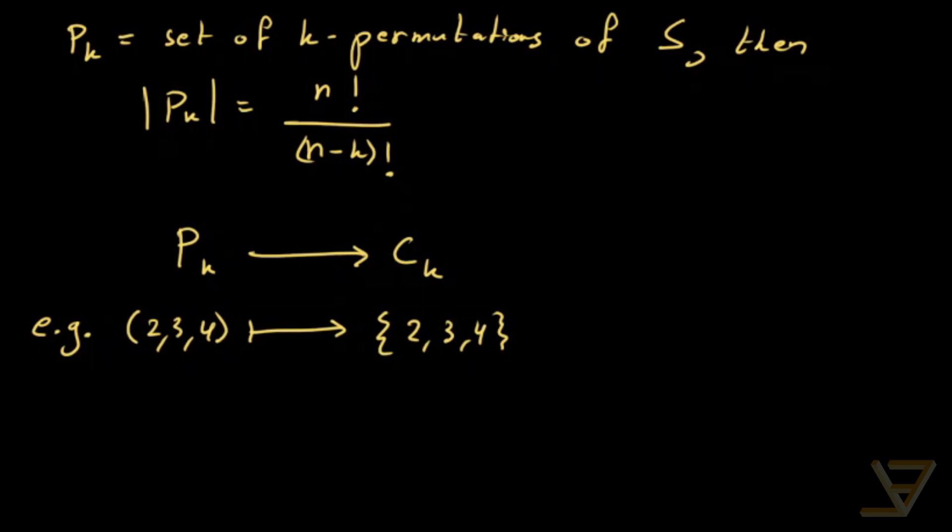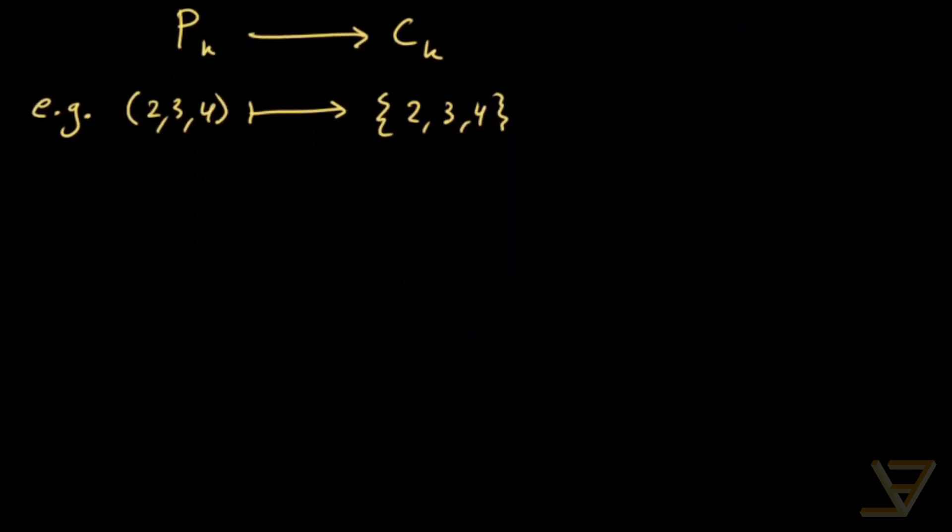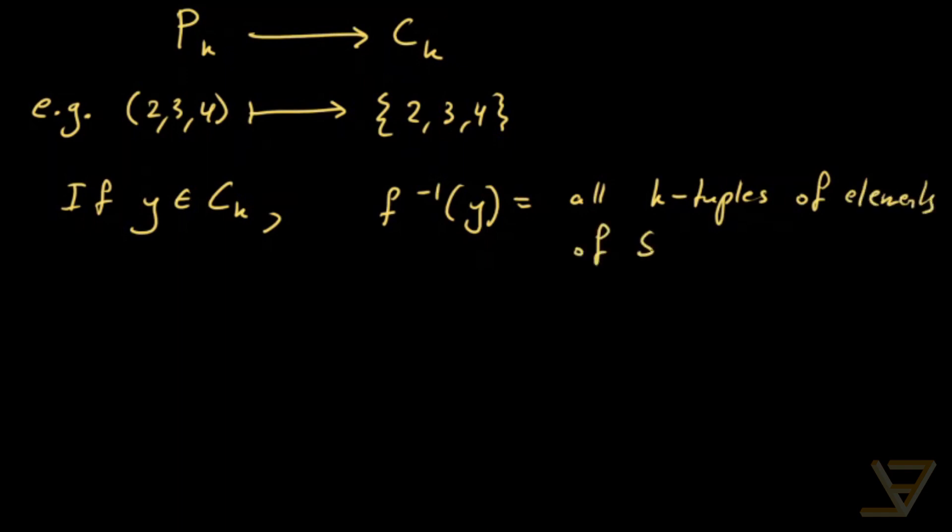we're going to show that this is a k factorial to 1 correspondence, but it's a function. And now let's take a look at the pre-images. If y is an element of C_k, then the pre-image of y consists of all k-tuples, so ordered k-tuples of elements of S with distinct elements